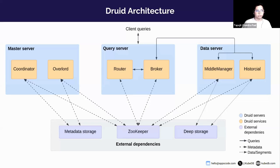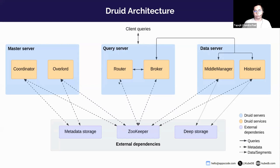For the query server, the broker service receives queries from external clients and forwards them to the data servers. The broker collects data from historical nodes and returns query results. The router provides a unified gateway in front of broker, overlord, and coordinator. It also comes with a web interface you can use to ingest data or manage the Druid cluster. That covers the architecture — Druid is very distributed and elastic.